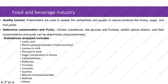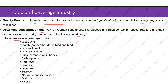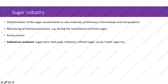In the food and beverage industry, polarimeters assess the authenticity and quality of natural products like honey, sugar, and fruit juices. Substances such as glucose and fructose exhibit optical rotation, and their concentrations can be determined using polarimetry. Substances analyzed include lactic acid, starch, lactose in milk, glucose, wine, honey carbohydrates, raffinose, fructose, levulose, sucrose, maltose, and xylose. Polarimetry is also used to determine sugar concentration in raw materials and intermediate and end products, for example during the manufacture of invert sugar.